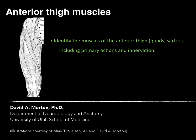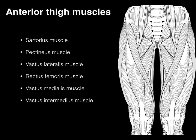We're next going to talk about anterior thigh muscles and specifically identify the muscles of the anterior thigh — think quads and sartorius muscle — including primary actions and innervation.